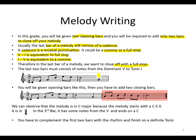The last two bars must consist of notes from the dominant five or the tonic one. Here's our example. You'll be given an opening bar and must add two bars to close off your melody. We can observe that the melody is in C major, because the melody starts with C, E, G — the tonic triad of C major — and it doesn't have sharps or flats.